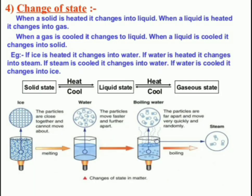In the last period we discussed the states of matter — those are three different states: solids, liquids, and gases. Along with these, we stated the properties of solids, properties of liquids, and properties of gases. Today we will discuss a new aspect: change of state. We have observed that there are three states of matter — solids, liquids, and gases — and we will discuss how these states can be changed.